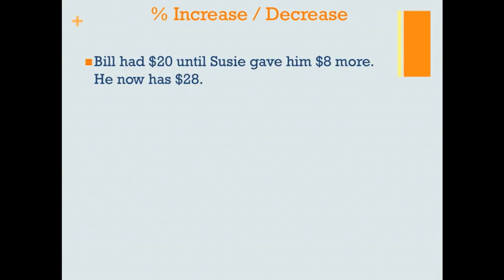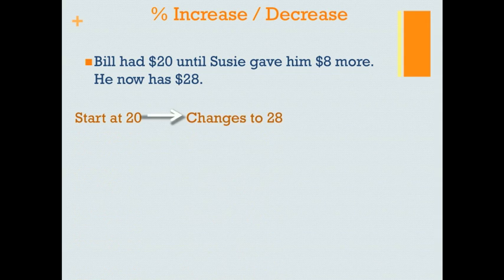For example, Bill had $20 until Susie gave him $8 more. He now has $28. In this case, Bill starts with $20, it then changes to $28. That produces a 40% increase. His amount changes by 40% and it increases.